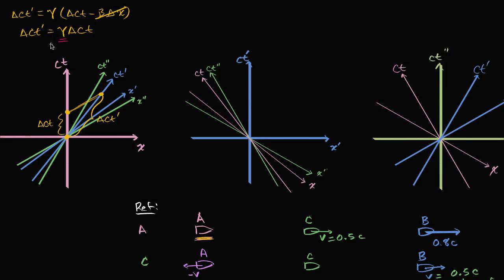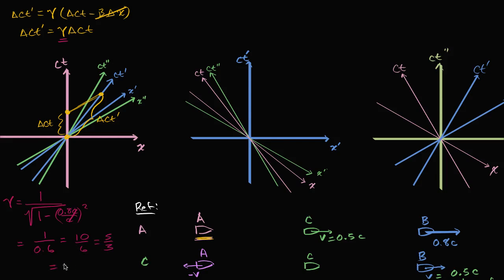The Lorentz factor is greater than one. Let's calculate it: gamma equals one over the square root of one minus (0.8c / c) squared. The c's cancel, 0.8 squared is 0.64, one minus 0.64 is 0.36, the square root of 0.36 is 0.6, so gamma equals one over 0.6, which is ten-sixths, or five-thirds, which equals one and two-thirds. So our change in ct-prime is going to be one and two-thirds times the change in ct.